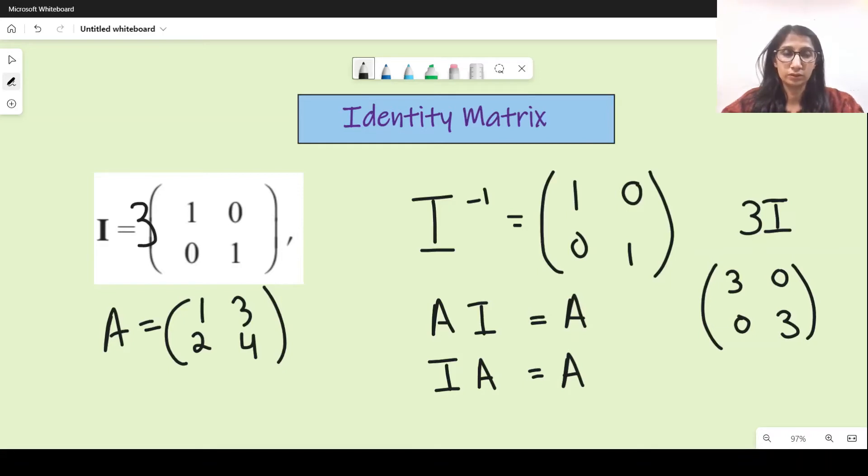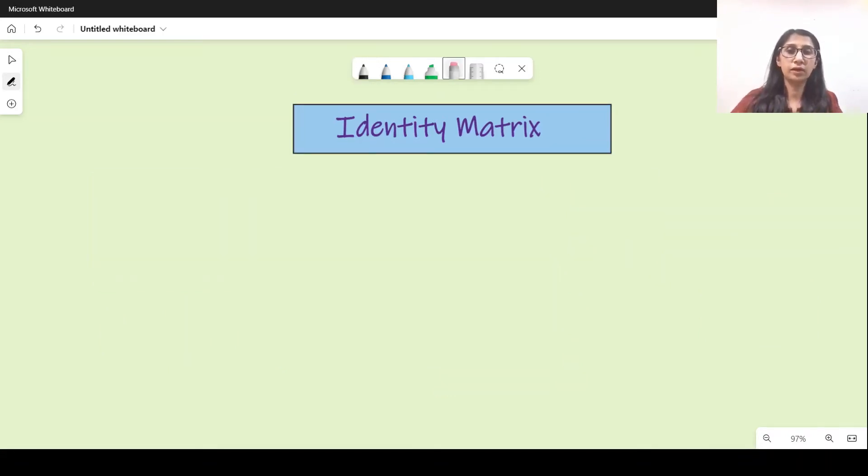Before we do past paper questions, there's another important property related to identity matrix: if you have a matrix A and you multiply it with the inverse of A, then the answer is always an identity matrix.